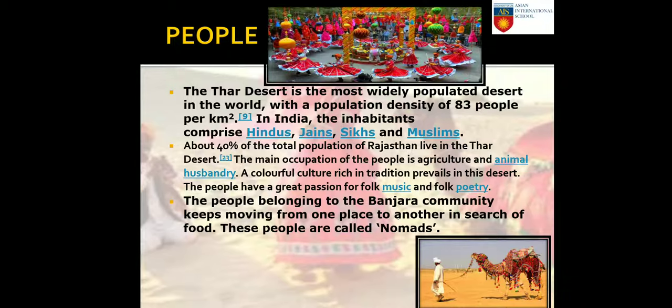The Thar Desert is the most widely populated desert in the world, with a population density of 83 people per square kilometer. Inhabitants comprise Hindus, Jains, Sikhs, and Muslims. About 40 percent of the total population of Rajasthan lives in the Thar Desert. The main occupations are agriculture and animal husbandry. People have a great passion for folk music and folk poetry. The Banjara community, who keep moving from place to place in search of food, are called nomads.